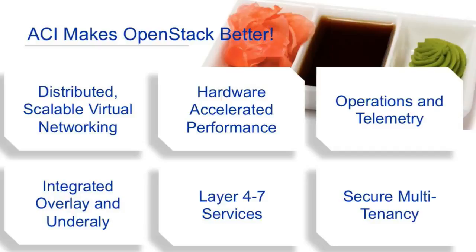We can also very easily integrate bare metal servers if you need to — database servers, legacy servers, et cetera. OpenStack doesn't have service chaining natively, so we can give you that with ACI if you need to stitch in layer four through seven services like firewalls and load balancers. We also give you visibility into that, so with automation we don't want to lose visibility, and that's something very important to us.